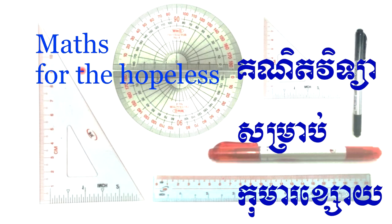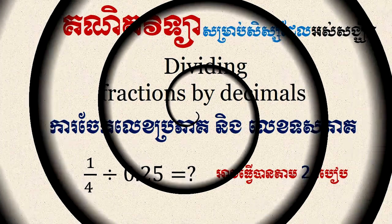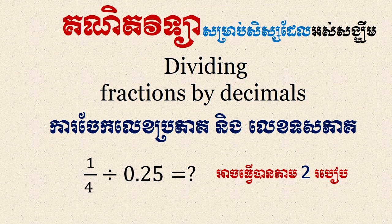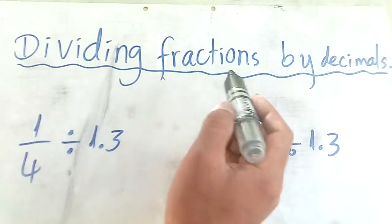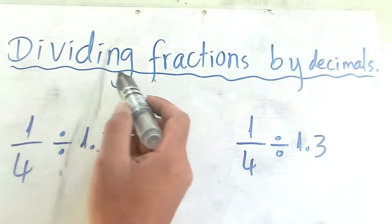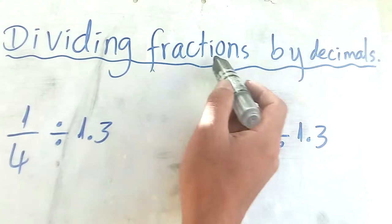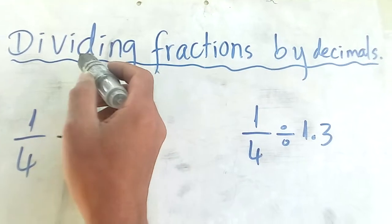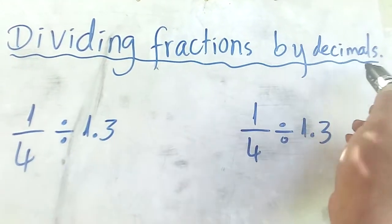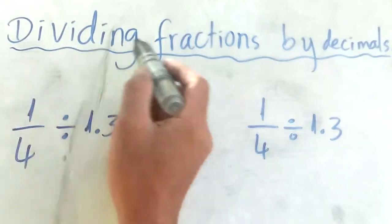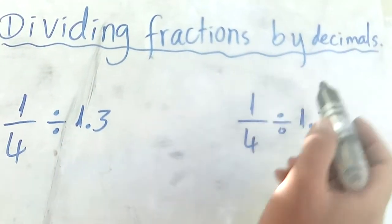Dividing fractions by decimals. Dividing fractions by decimals. This is why we want oil to dry with oil.